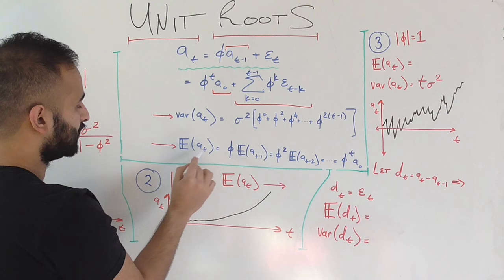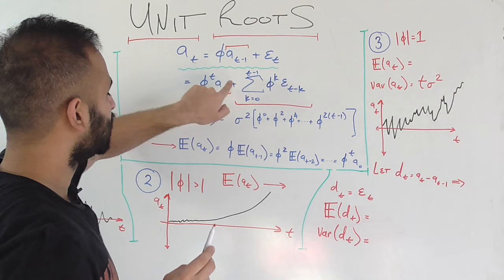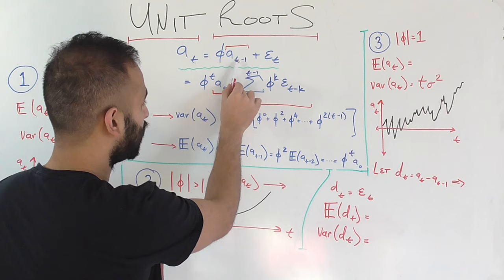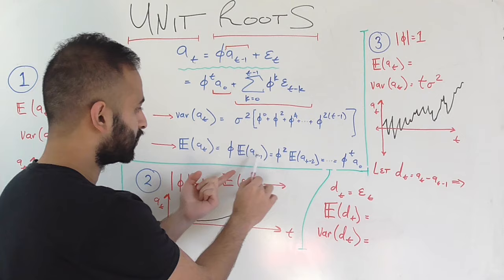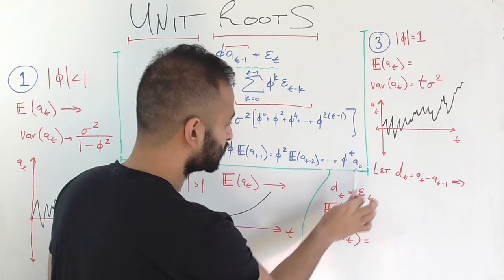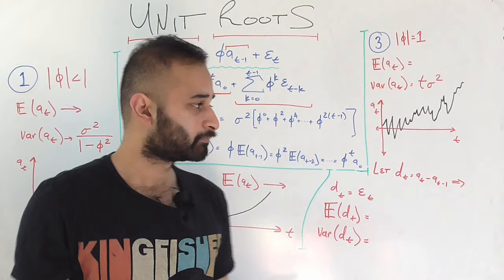Using this representation, let's look at two quantities: the variance and the expected value of our time series. Taking the expected value of A_t: the expected value of epsilon is zero since we assume errors have zero mean, so that term goes away. We then get phi times the expected value of A_{t-1}, which is recursive — we keep pulling out phi until we reach A_0. So the expected value of A_t at any time stamp t is phi to the power of t times A_0, the first value of the time series.